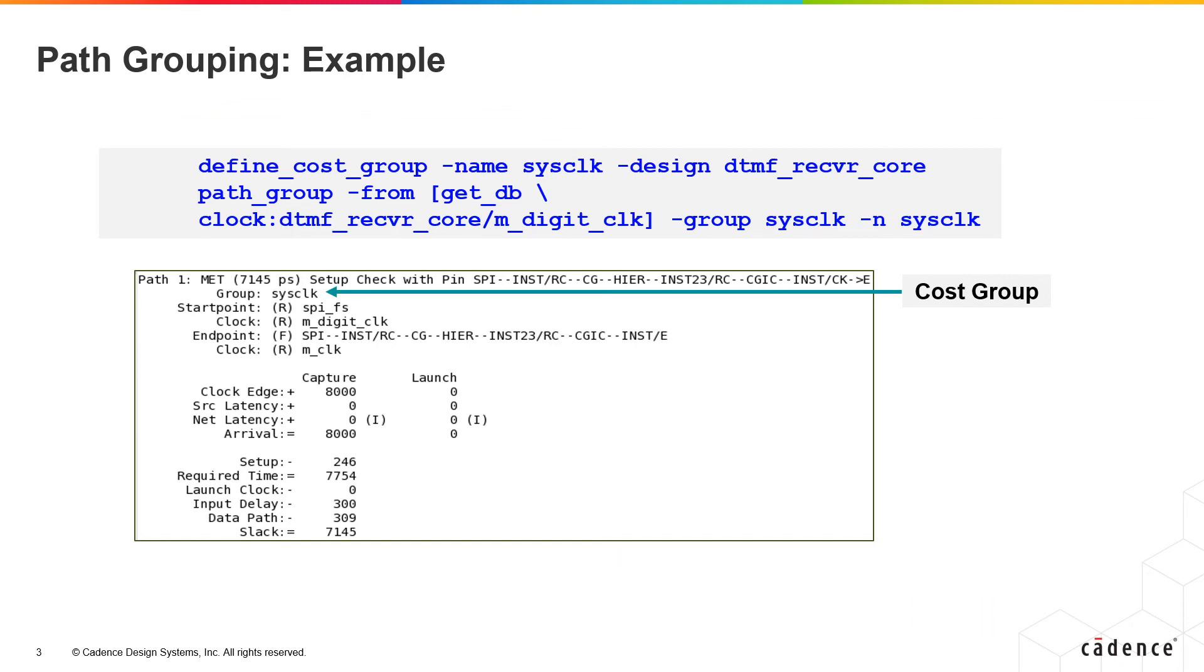So this slide shows the example for path grouping. We are defining the cost group, specifying the name and the design. And then while defining the path group, we specify from which clock we associate with the specific cost group and then we specify the name of the path group.